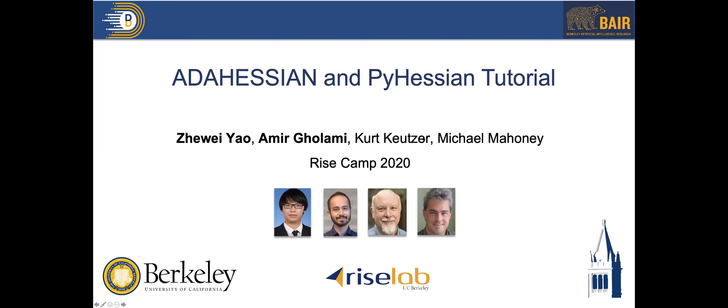Today we present two works: PyHessian and AdaHessian. The basic idea is to analyze neural networks from a second-order methods perspective. You have a trained neural network and you want to understand how it learned, whether it converged, what the loss landscape looks like, how robust the model is, and how to train faster with less susceptibility to hyperparameters. We will cover analyzing neural network behavior using second-order methods, and then how to use that knowledge to make optimization faster and better.